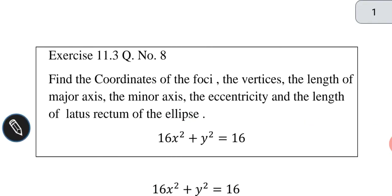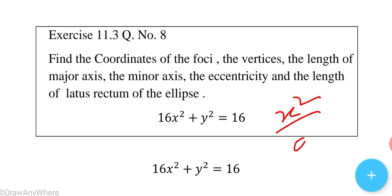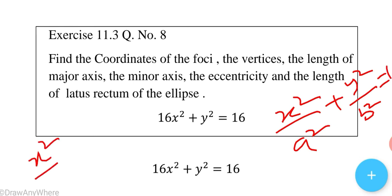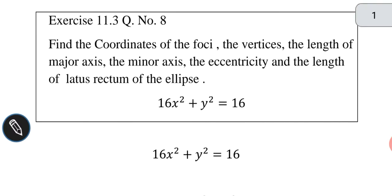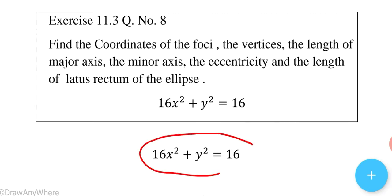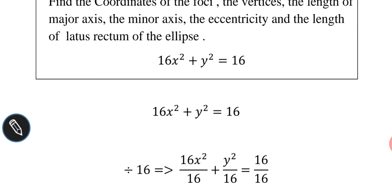The given equation is 16x² + y² = 16. This is not in standard form. The standard form is x²/a² + y²/b² = 1 for major axis along the x-axis, or x²/b² + y²/a² = 1 for major axis along the y-axis. So we need to convert it by dividing the entire equation by 16.